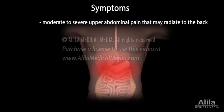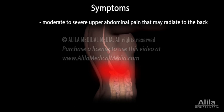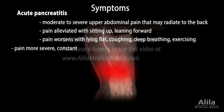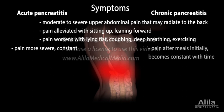The most prominent symptom is a moderate to severe upper abdominal pain that may radiate to the back. The pain is typically alleviated with sitting up or leaning forward, and worsens with lying flat, coughing, deep breathing, and exercising. Pain from acute pancreatitis tends to be more severe and constant, developing abruptly in gallstone pancreatitis and gradually over a couple of days in alcoholic pancreatitis. Patients with chronic disease may initially experience pain episodically, typically after meals, but as the disease progresses, the pain can become constant. About 10% of chronic patients do not feel any pain.